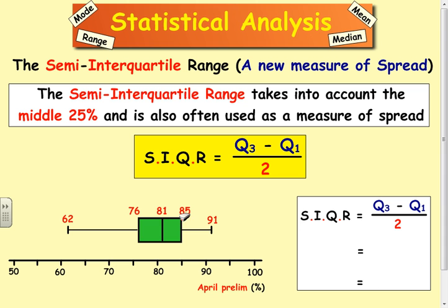So you do Q3 take Q1, that's the interquartile range, but we split it in two to get the semi-interquartile range. In this case, you still do 85 take away 76, but you half your answer, and you get 4.5.